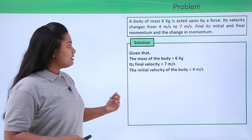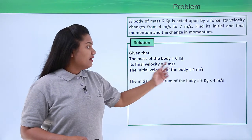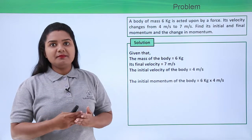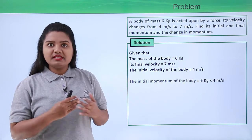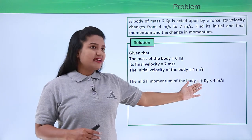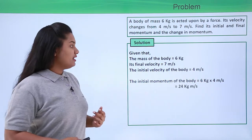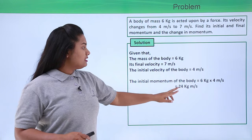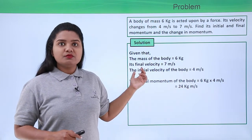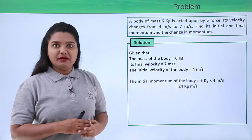Now let us find the initial momentum of the body. The initial momentum is the mass multiplied by the initial velocity. So this will be equal to 6 kg multiplied by 4 meters per second, which gives 24 kg meters per second. So 24 kg meters per second is our initial momentum.